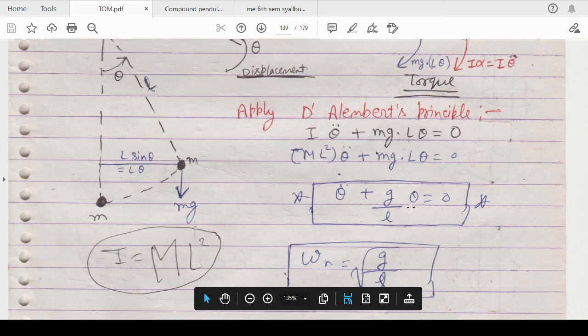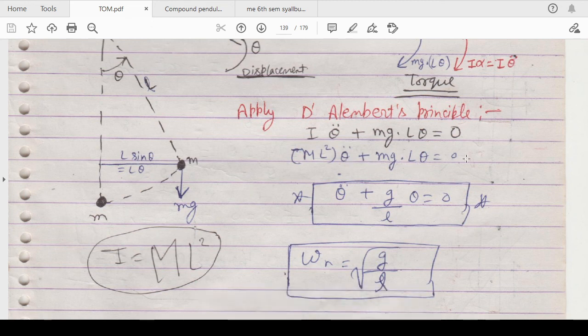I is your mass moment of inertia which we have kept as ml squared. So ml squared theta double dot plus mgl theta equals zero. If you rearrange it, then it will look like theta double dot plus g/l into theta equals zero.